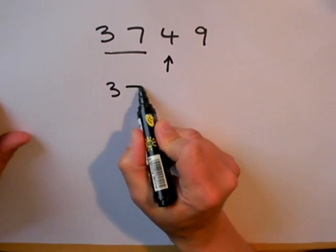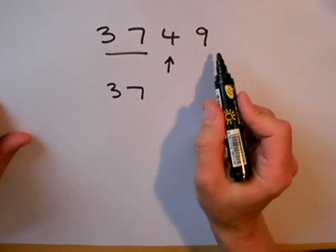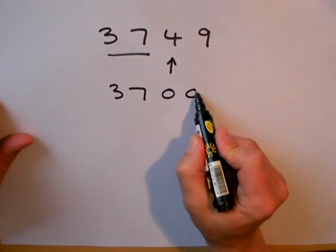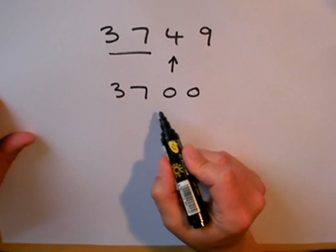Because the number is a large number 3749, once I've rounded it off I need to put a couple of zeros to show that it's 3700.